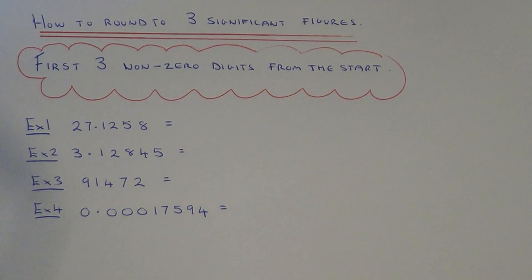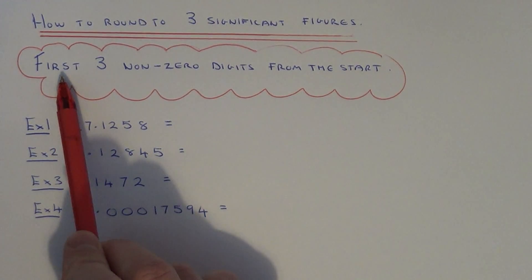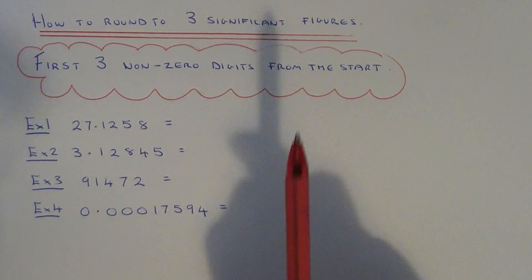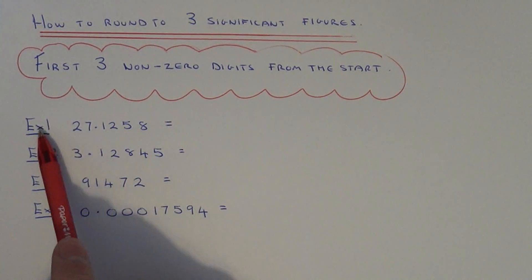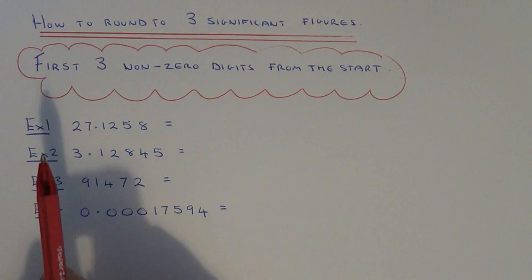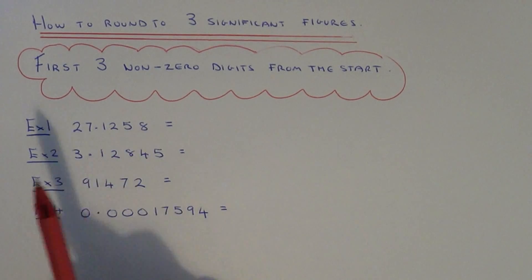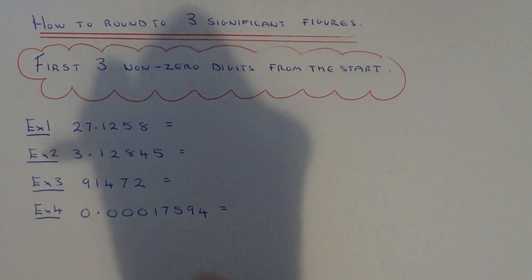Today I'm going to show you how to round any number off to three significant figures. What you need to do is round the numbers so it's the first three non-zero digits from the start of the number. Let's take a look at rounding these numbers off to three significant figures. In example one you've got 27.1258, so it's basically three numbers from the start of the number.